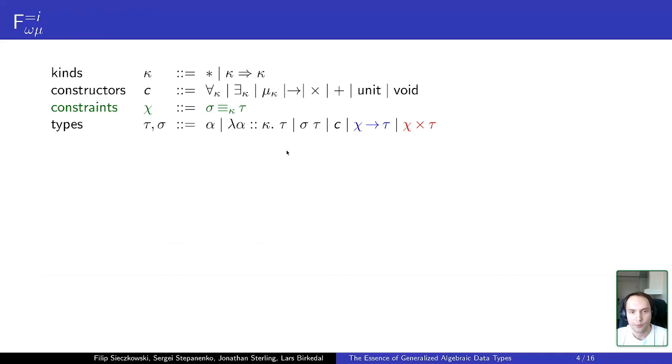So here you can see syntax at the type and kind level. So it's a system omega with three additional gadgets. Let's start with constraints. Constraints express inequality in between two types, both well-kinded at kind kappa. And we have two additional types: chi-arrow-tau and chi-times-tau. Informally they express assumption on equality and assertion of equality. And we can use them to encode most of the GADTs.